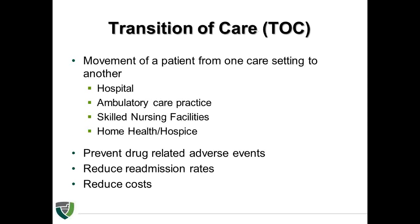Transition of care is defined as the movement of a patient from one care setting to another. This movement can be to or from a hospital, to or from an ambulatory care practice, to or from a skilled nursing facility, or to or from hospice. Those listed on the slide are just a few examples of patient care settings, and there can be many more. This webinar will focus on the transition of care from the hospital to the home.